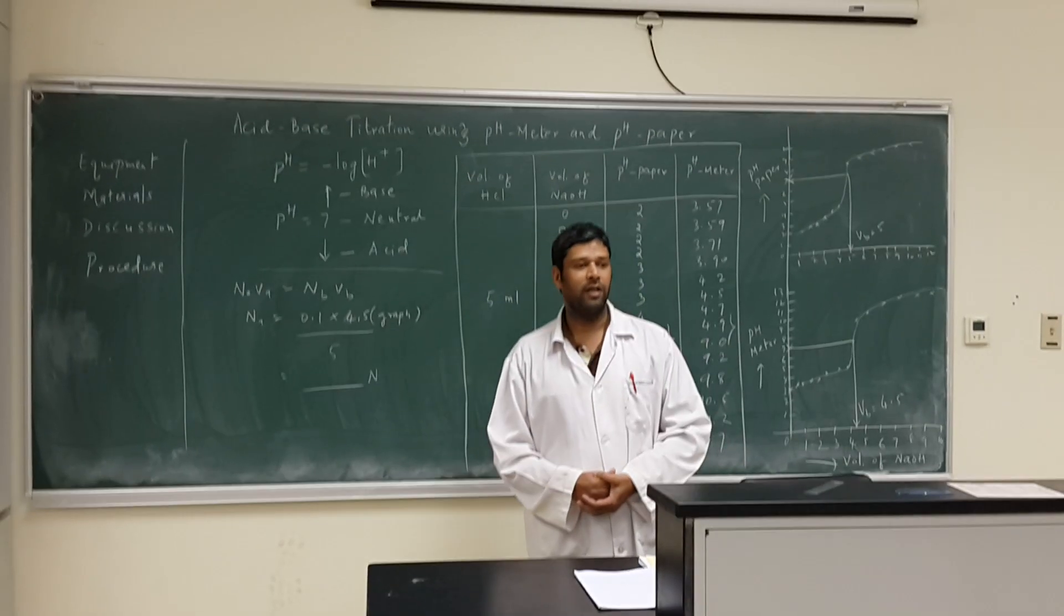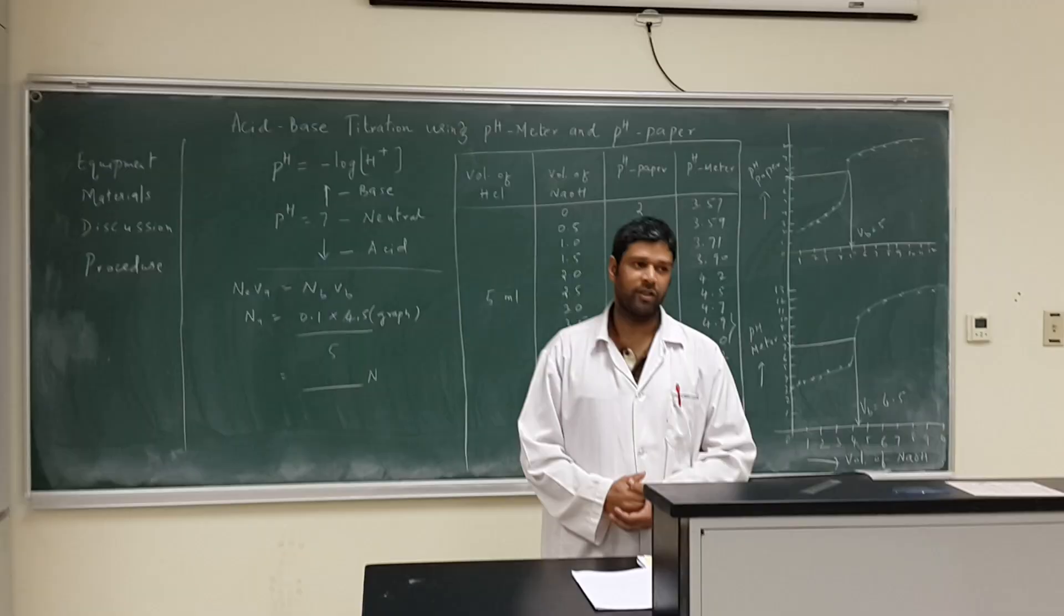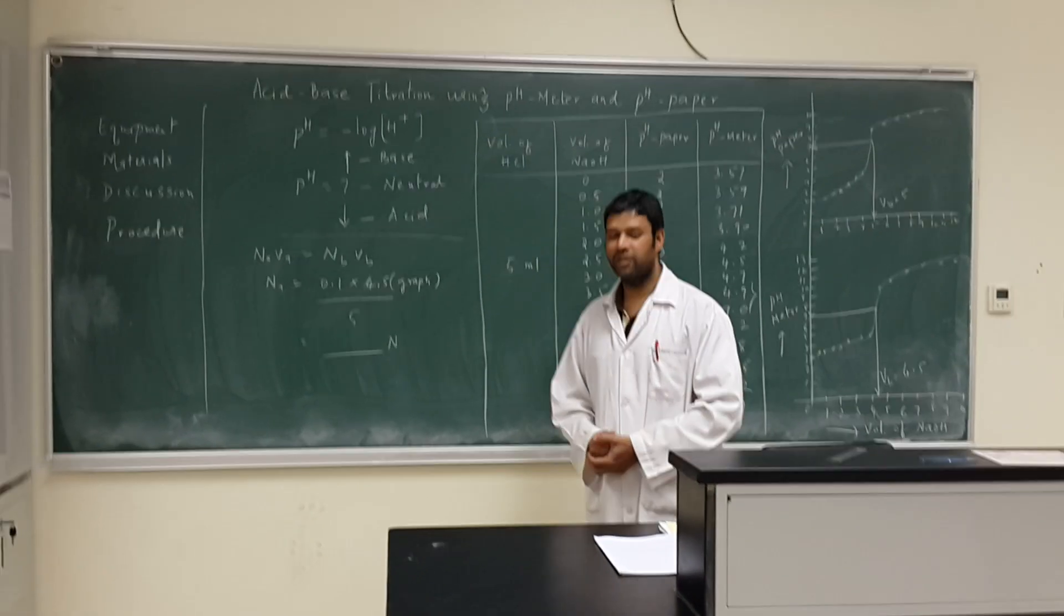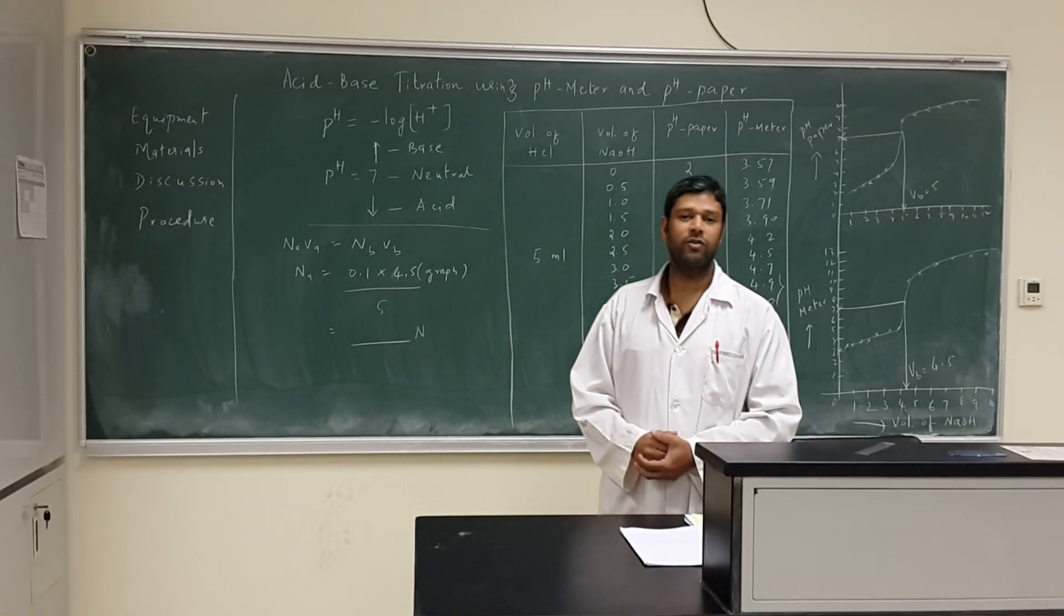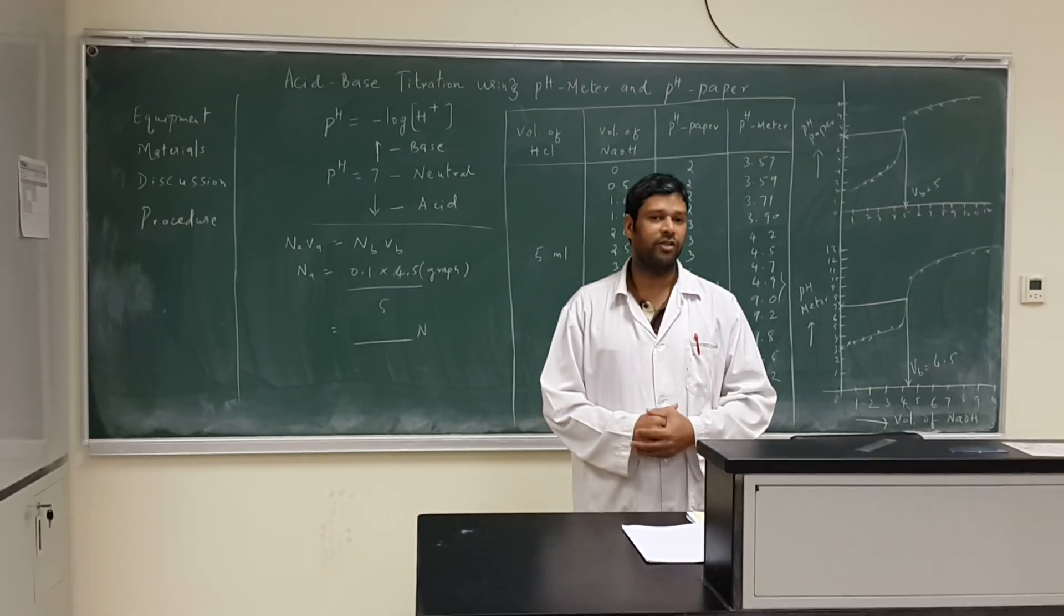Equipment includes pH meter and glass electrode, beakers, pipette, etc. Materials needed are hydrochloric acid, sodium hydroxide, and indicator chart.